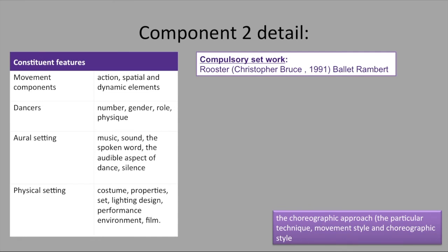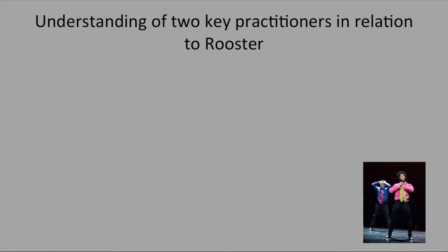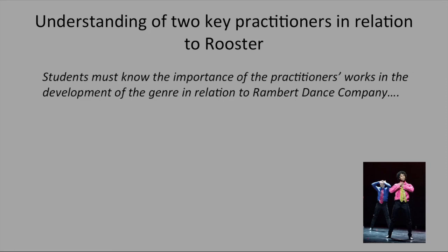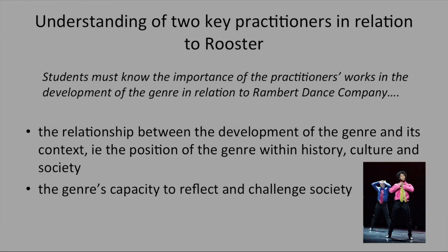In component two, the focus is on constituent features including movement components, dancers, aural setting and physical setting. The compulsory set work is Rooster by Christopher Bruce, performed by the Ballet Rambert Company. Students must know the importance of the practitioners' work in the development of the genre in relation to Rambert Dance Company, the relationship between the development of the genre and its context — including the position of the genre within history, culture and society — and the genre's capacity to reflect and challenge society.